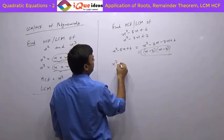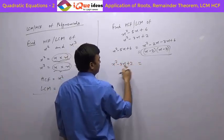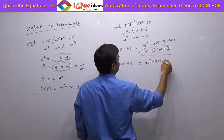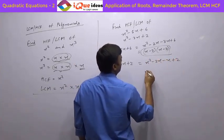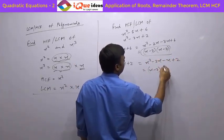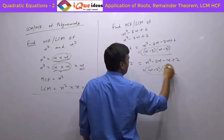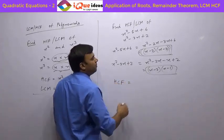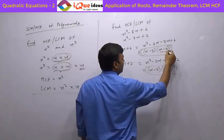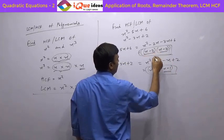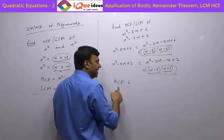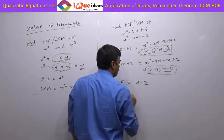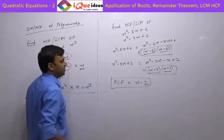The other one — x square minus 3x plus 2 — factorize it. 1 into 2 is 2 and 1 plus 2 is 3. So it is x square minus 2x minus x plus 2, which gives us x minus 2 into x minus 1. Now HCF will be the total common part. x minus 3 is not common, x minus 1 is not common, but x minus 2 and x minus 2 are common. So HCF is x minus 2.